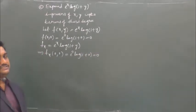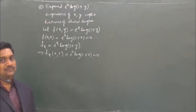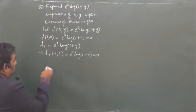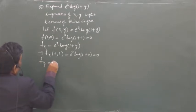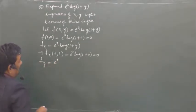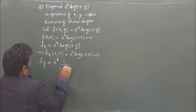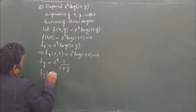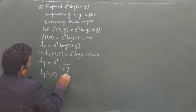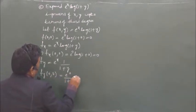The next term in the expansion is y · fy at (0,0). Now find fy: it is e^x into derivative of log(1+y) with respect to y, which gives e^x/(1+y). Now fy at (0,0) is e^0/(1+0) = 1.